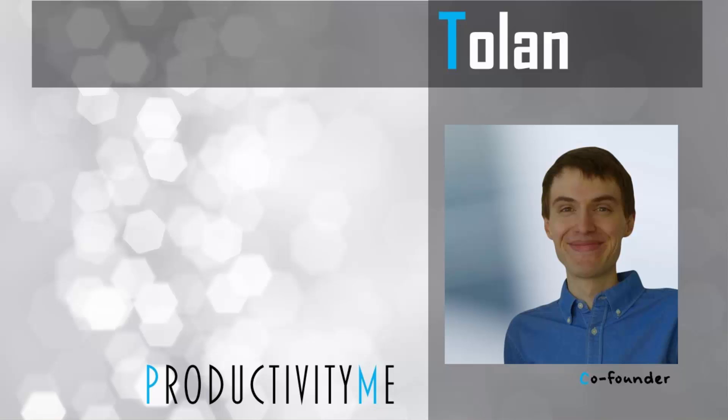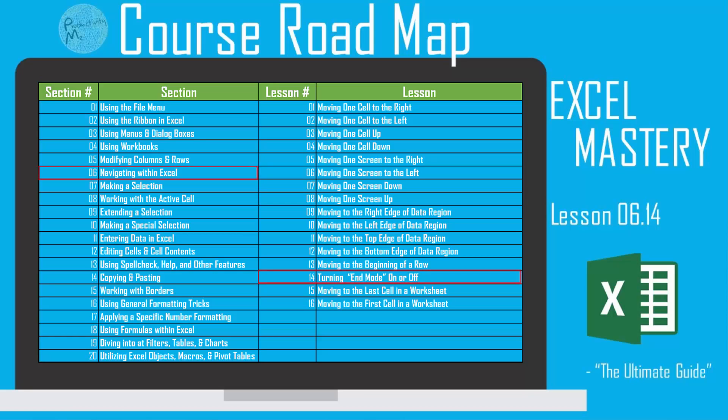Hi and welcome! My name is Tolan and I'm the co-founder of ProductivityMe. In this video, we're going to look at using end mode as a way to jump to the end of a specific cell or a specific region of data, as well as a method to highlight a series of data within a column or row. So with that, let's get started.